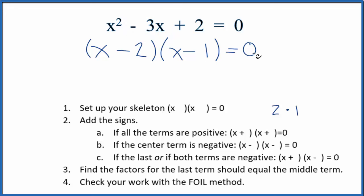Let's make sure we have this correct by using the FOIL method to check our work. First term: x times x gives us x². Outside: x times -1 is -x. Inside: -2 times x is -2x. Last term: -2 times -1 gives us positive 2. All of that equals 0.